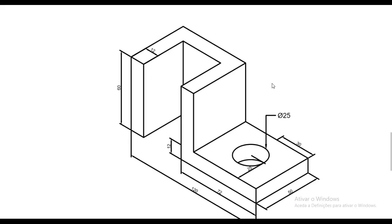We have the same drawing here with dimensions. The height will be 60. For the size we don't have here directly, but we need to make a calculation: from this point to that point is 120 minus 72, which will be 48, plus 12. So from this point to this point is 60. We'll start making this drawing from the top and then going down.